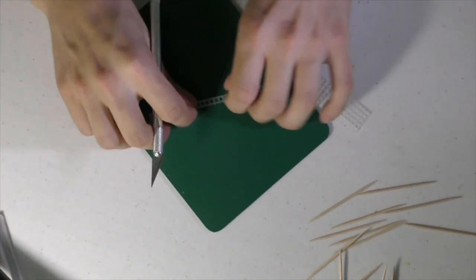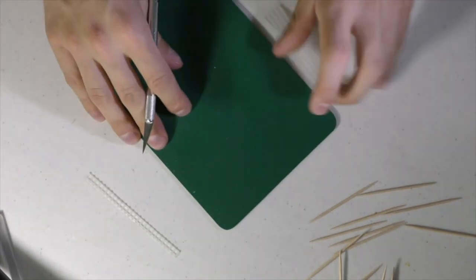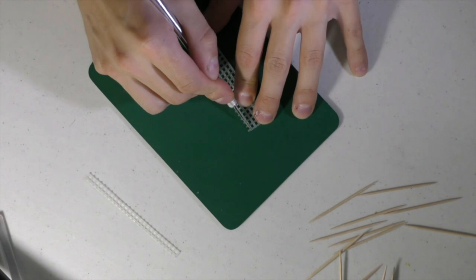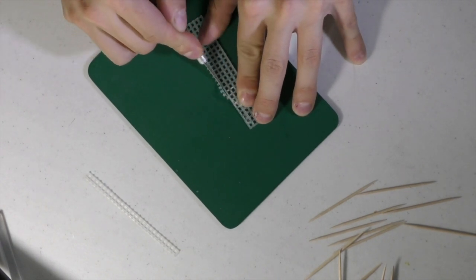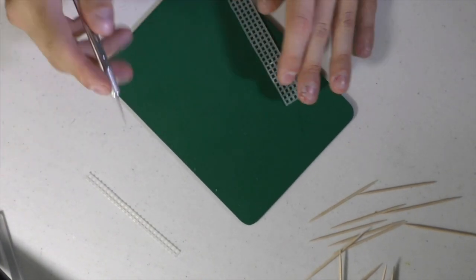And then from this point on I'm gonna be speeding up the camera so that we can get through some of the boring part. This took me about 20 minutes to make this entire ladder. We're gonna cut out another strip of the plastic mesh in order to make the other side of the ladder.